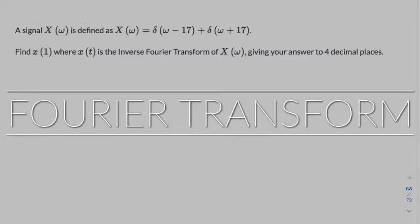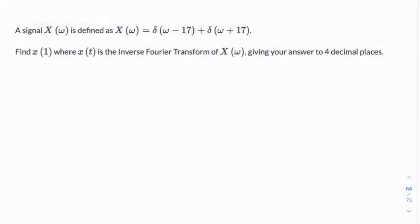In this question, we're given a signal in the frequency domain that consists of two impulses at plus and minus 17 radians per second, and we're asked to find x of 1, and that is clearly in the time domain because it's a lowercase x.